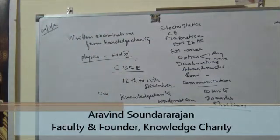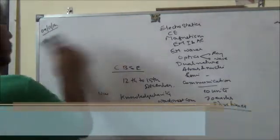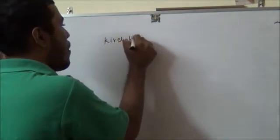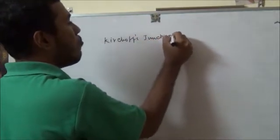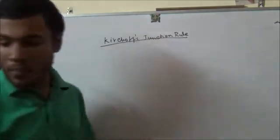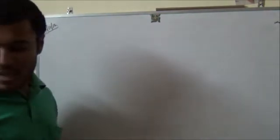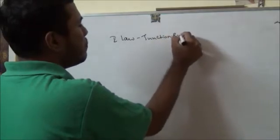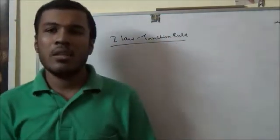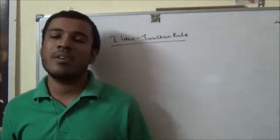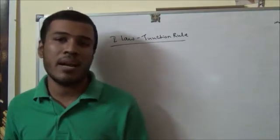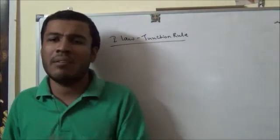Now let us go to our topic. We are going to see a very small topic today: Kirchhoff's Junction Rule. There are two rules — one is Kirchhoff's Junction Rule, another is Kirchhoff's Voltage Rule. We will see the first law today. The Junction Rule is very simple. We have got many laws which are similar to it, like the law of conservation of energy or mass — energy is neither created nor destroyed, mass is neither created nor destroyed. These kinds of laws we have always seen.